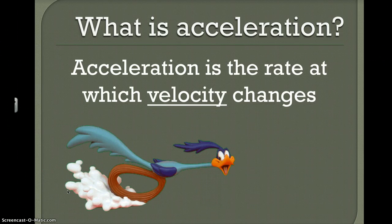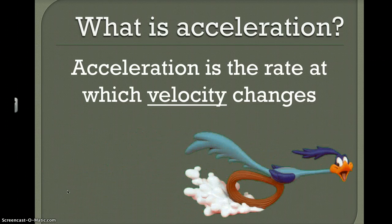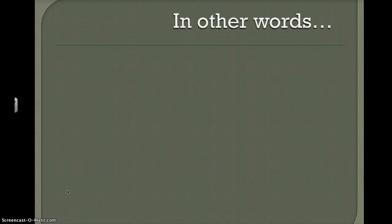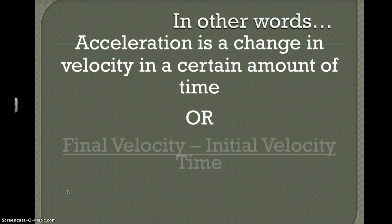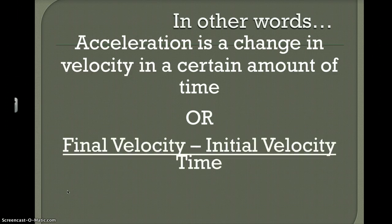So he goes from here to there — short and simple — he had to accelerate to get over there. In other words, it's a change in velocity over a certain amount of time. The formula is: final velocity minus initial velocity, divided by time. Basically, how fast were you at the end minus how fast you were at the beginning, and how long did it take to get between those two speeds.